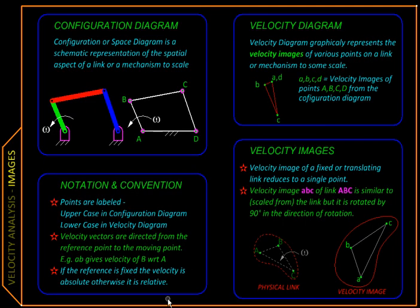All these concepts can be used to come up with a graphical method of analyzing velocities in a mechanism. We start by plotting the given mechanism schematically to some scale, or rather its given configuration, and this is then called the configuration or space diagram.